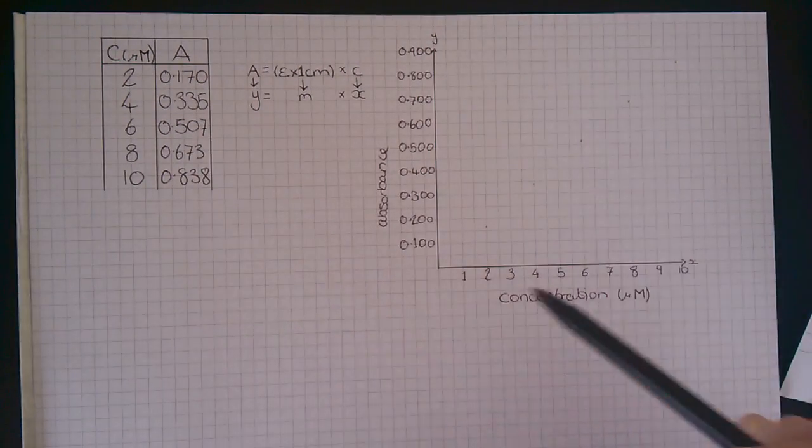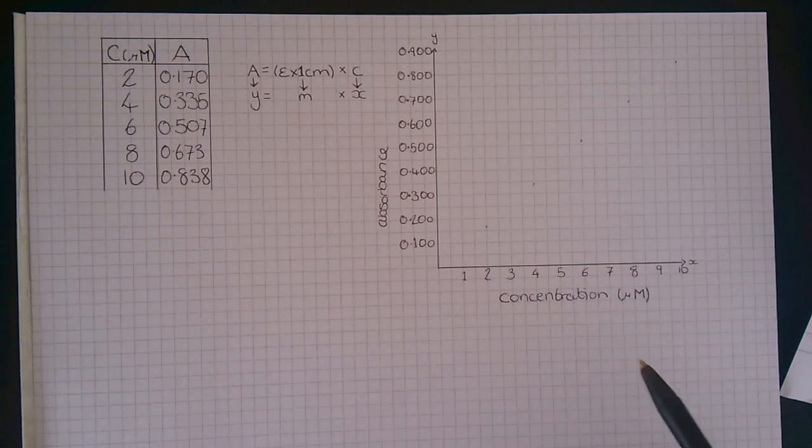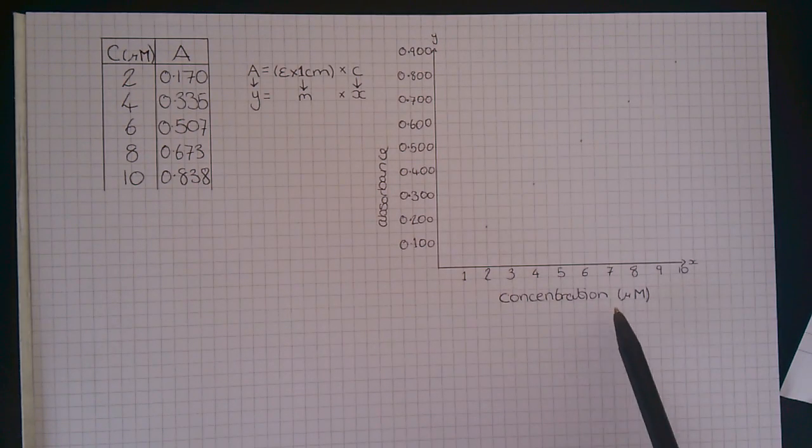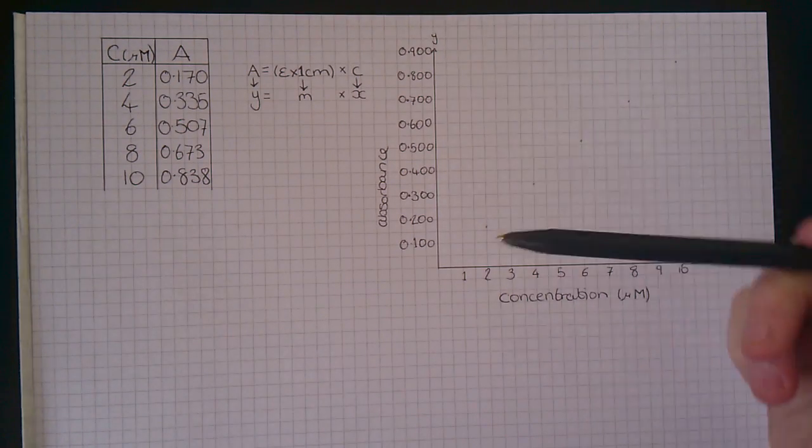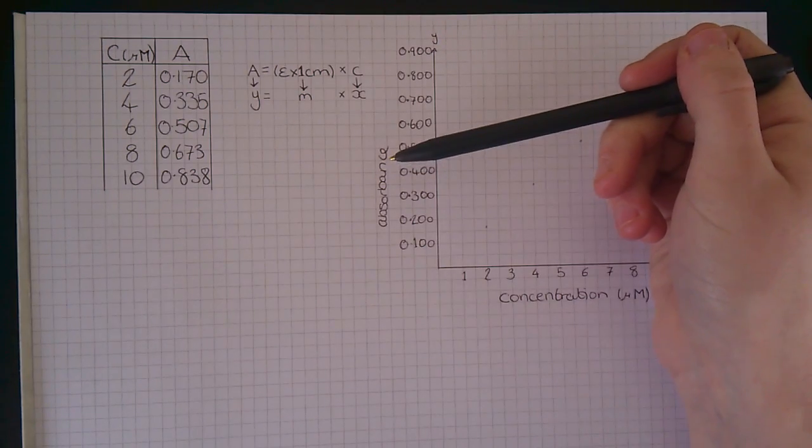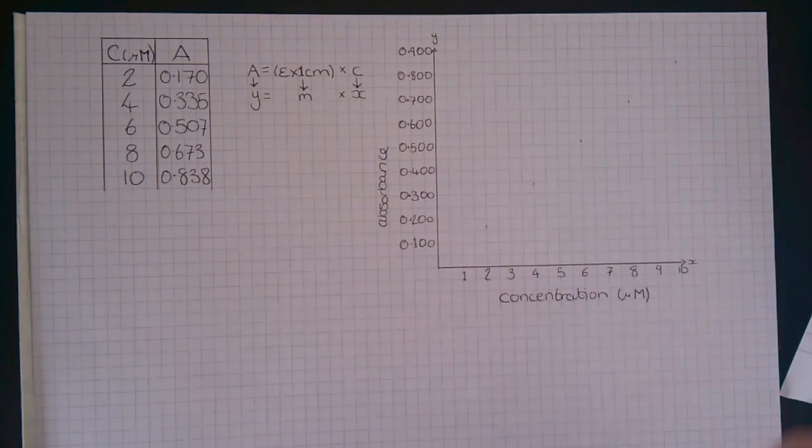This is our table of data, and this is our graph. The x-axis is concentration in micromolar units, and the y-axis is absorbance, which is in arbitrary units, so you don't need to write any units down.